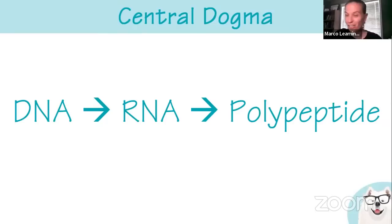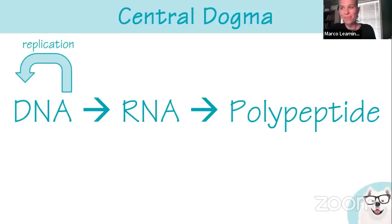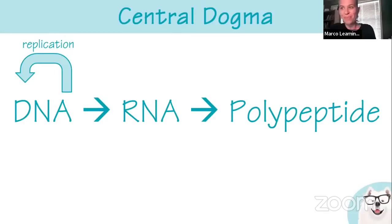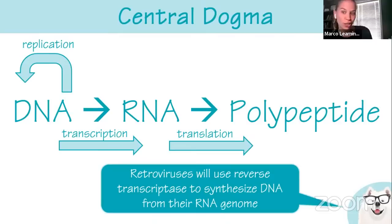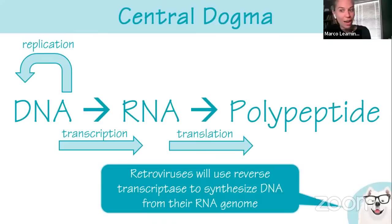Now we move into central dogma. If you're making more DNA, that's replication. If you go from DNA to RNA, that's transcription. If you go from RNA to a polypeptide, that's translation. Retroviruses use reverse transcriptase to synthesize DNA from their RNA genome — this violates the central dogma. HIV uses this process, inserting itself into your genome as a provirus, so every time the cell copies, you make copies of the virus.